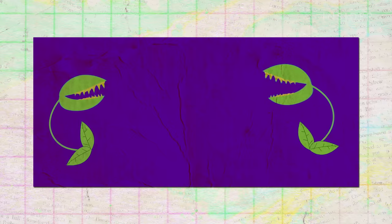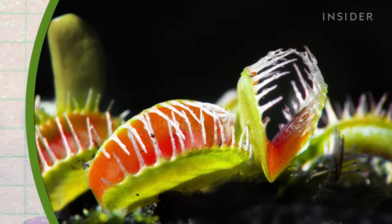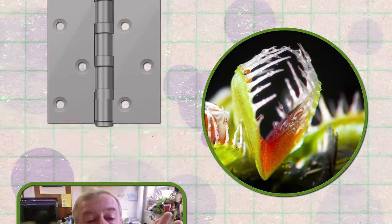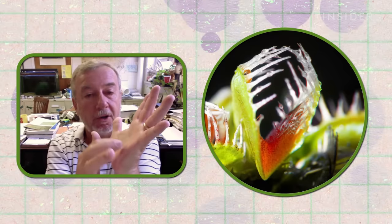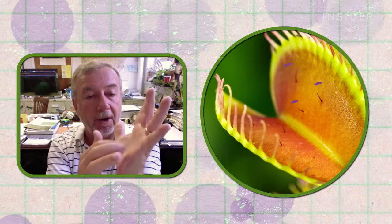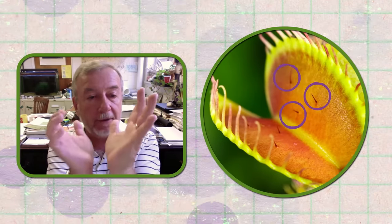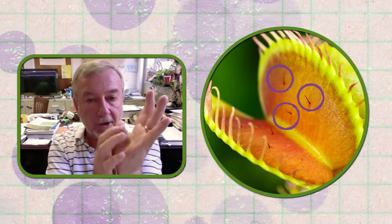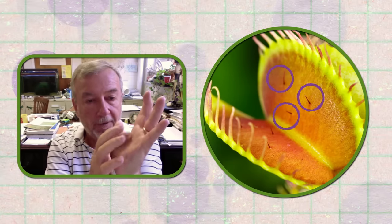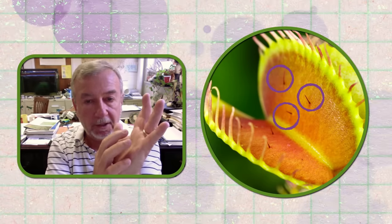The trap itself looks like an open mouth. It's made of two pads attached to a hinge. On each one of those pads, there are usually three little trigger hairs in a kind of a triangle. And those trigger hairs are very, very sensitive to being disturbed.